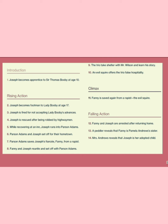Some believe it is not a real climax of the novel. I believe that as we came to know Mr. Wilson's story, that would be the climax — but this is interpretation. The falling actions are: Fanny and Joseph are arrested after returning home; a peddler reveals that Fanny is Pamela's real sister; Mrs. Andrews reveals that Joseph is her adopted child. There is a connection between plot points 14 and 9. The resolution follows from these revelations.